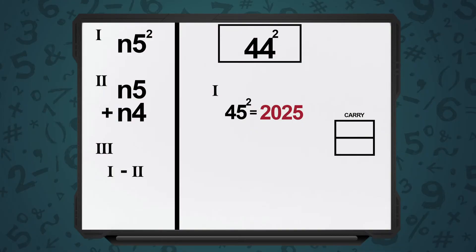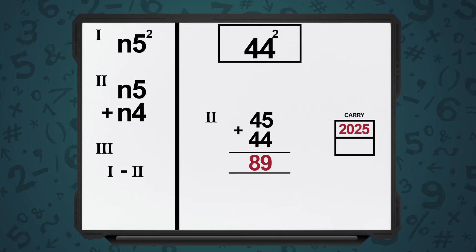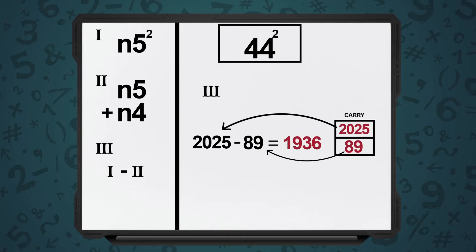Let's take one more example: 44 squared. In the template n4, n equals 4. So the corresponding n5 is 45. Step 1: n5 squared — 45 squared, we know, is 2025. Step 2: n5 plus n4, so 45 plus 44 equals 89. And Step 3: result of Step 1 minus result of Step 2 — so it's 2025 minus 89, which equals 1936.